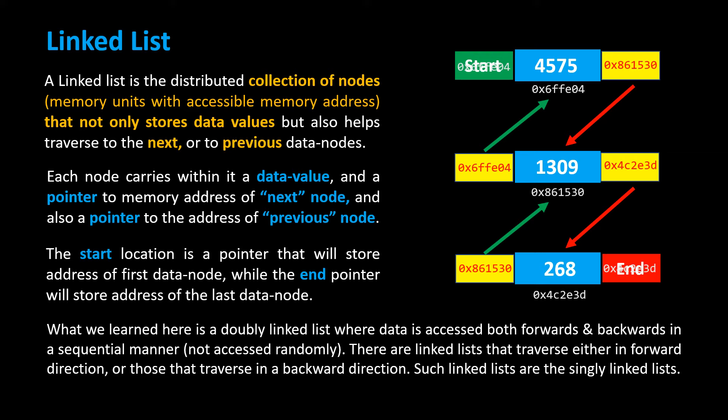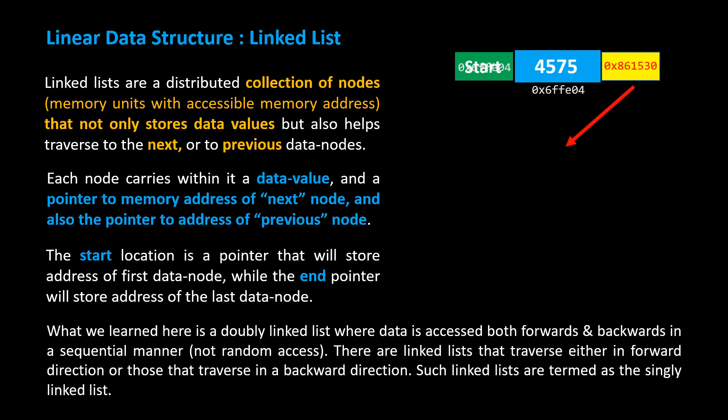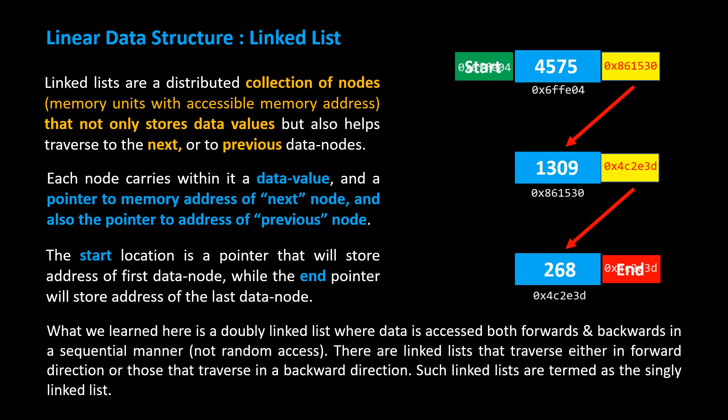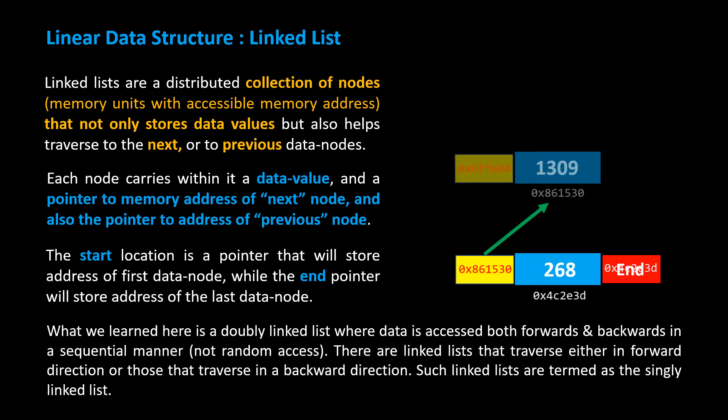And that means data is not accessed randomly. There are linked lists that traverse either in forward direction or those that traverse in a backward direction. Such linked lists are termed the singly linked lists.